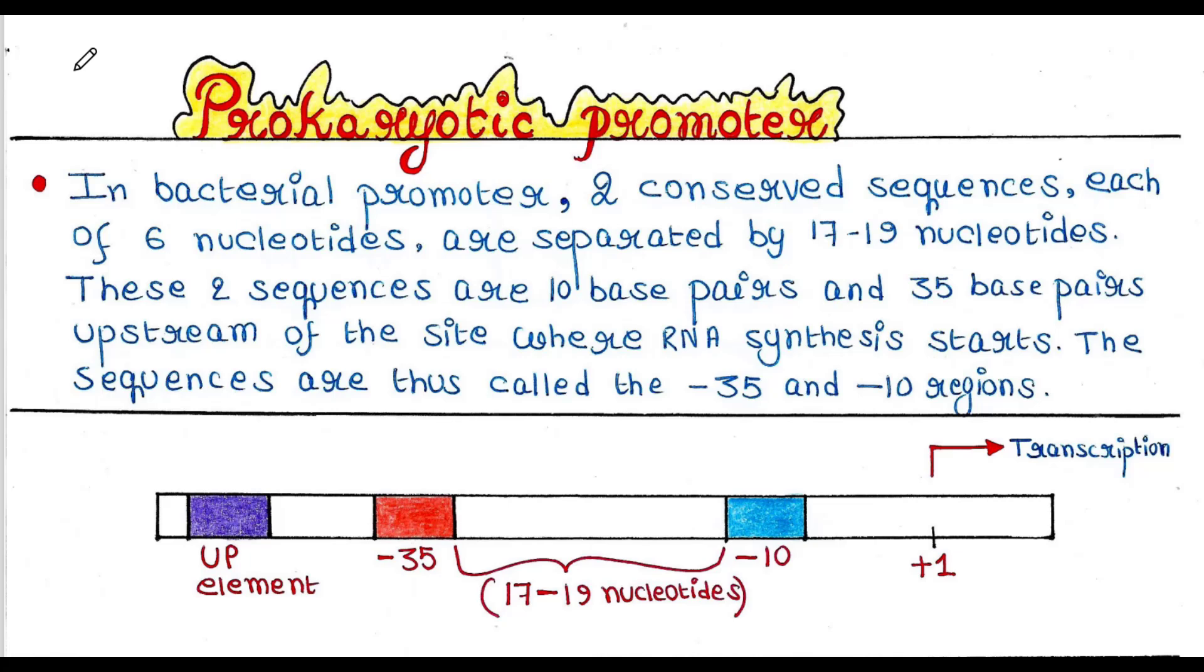In bacterial promoters, two conserved sequences are present. Conserved means unchanged across different species over time. These two sequences are the minus 10 and minus 35 sites. Each of them contains six nucleotides and these are separated by 17 to 19 nucleotides.